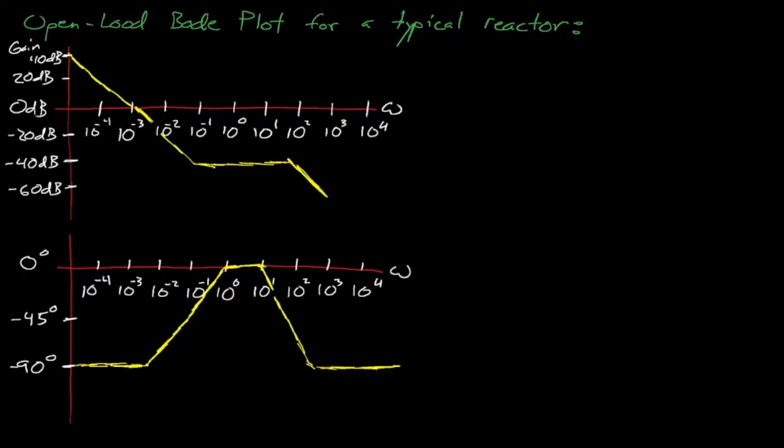Nonetheless, these Bode plots tell us several things about reactors. The phase for our reactor transfer function never reaches negative 180 degrees, which means that our gain margin is infinity. The gain crosses zero decibels around a frequency of 10 to the negative third, which corresponds to a phase of about negative 90 degrees. This means that our phase margin is about 90 degrees.